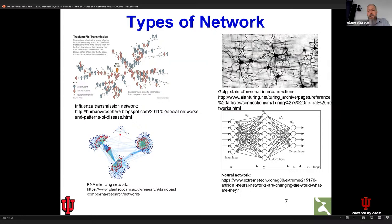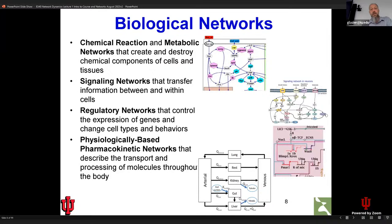All of these networks have a lot of differences — maybe the differences are more salient than the similarities between these networks. When we talk about biological networks, there are a number of types we will run into frequently. Chemical reaction and metabolic networks are the networks that process energy and build the components of cells, primarily in the mitochondria, in every cell in your body. If you didn't have those metabolic networks, the cells would die — mitochondrial failure is one of the ways cells die.